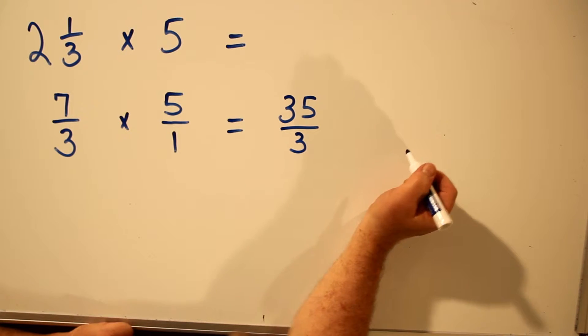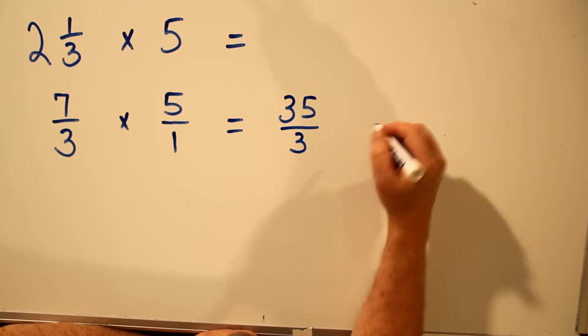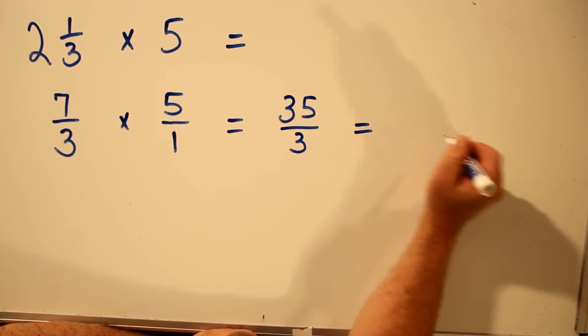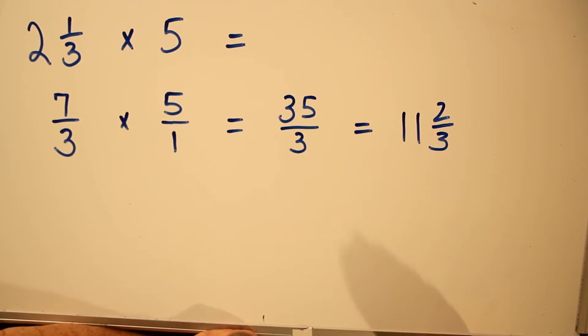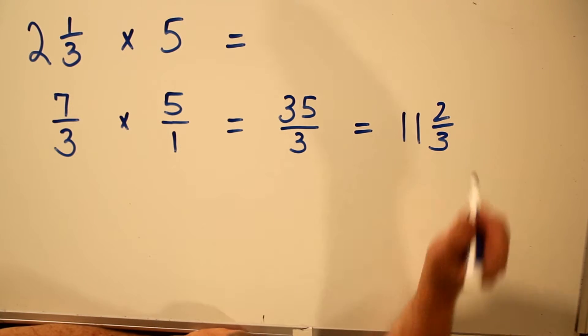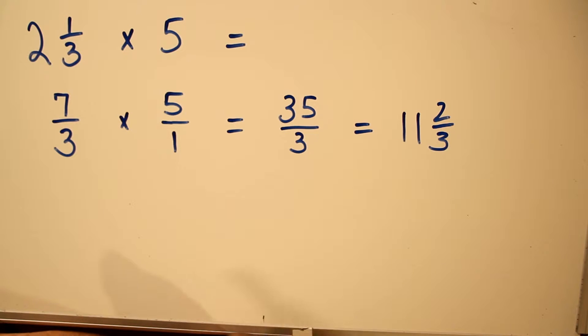Now this is an improper fraction. It's not in simplest form. I'm going to show you the simplest form, and you can watch the detailed video on how to convert fractions to simplest form. But in simplest form, 35 over 3 is 11 and 2/3.